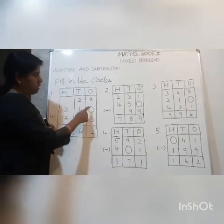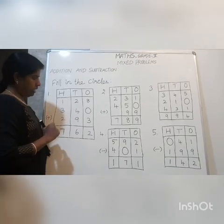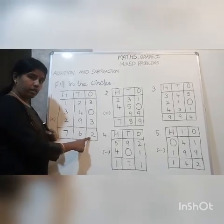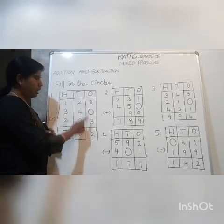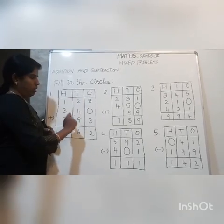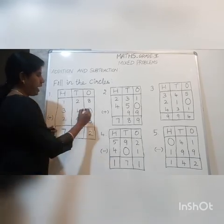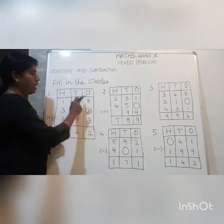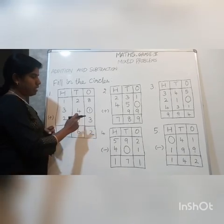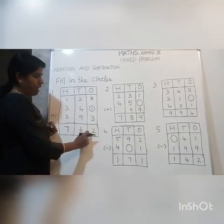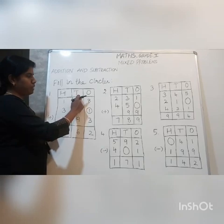Starting with ones: 8 plus 3 is 11. But the digit shown is 2, so the answer was 12 — we write 2 here and carry over 1. Then 8 plus 3 plus 1 carry over is 12 — write 2 and carry over 1. Then 2 plus 1 carry over is 3, and 3 plus 4 is 7.